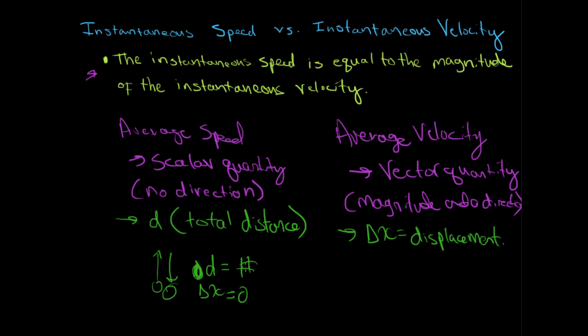So, if this is the case, then how is it that the instantaneous speed is equal to the magnitude of the instantaneous velocity? We saw that they're quite different when we're talking about averages.